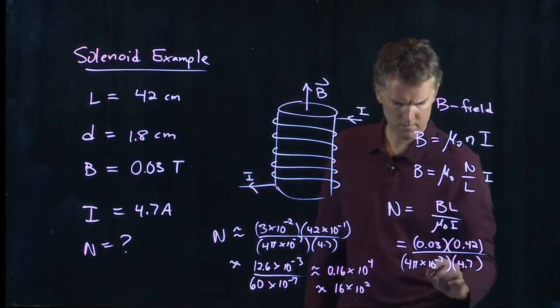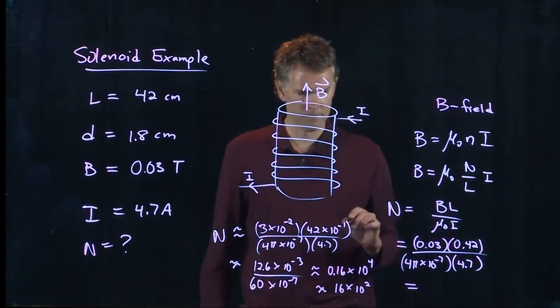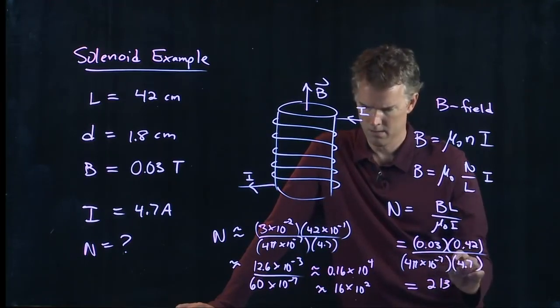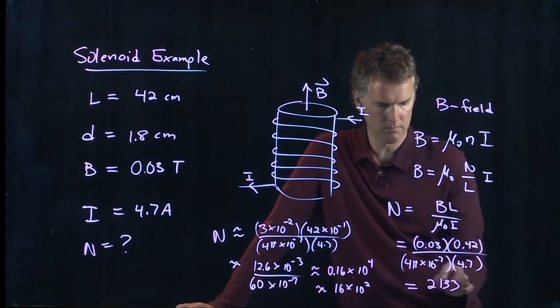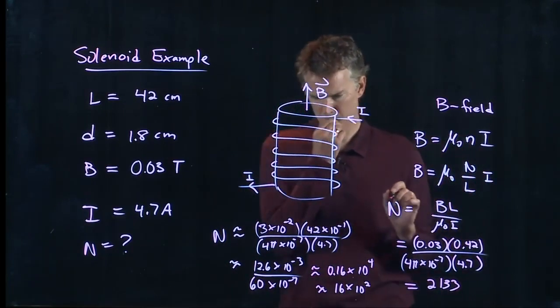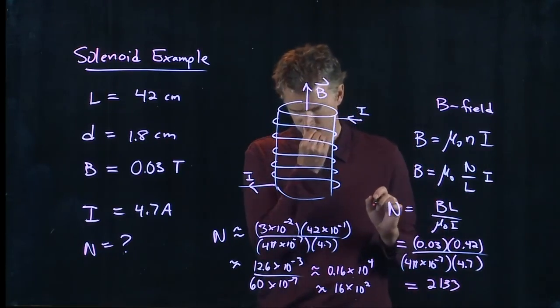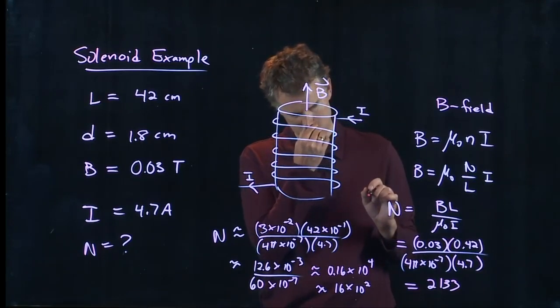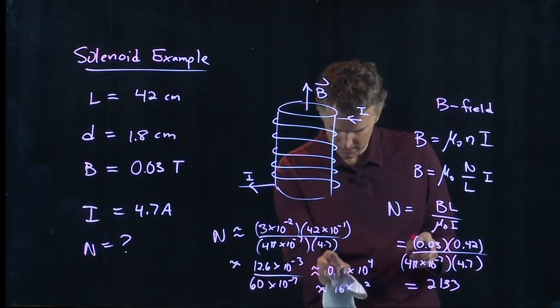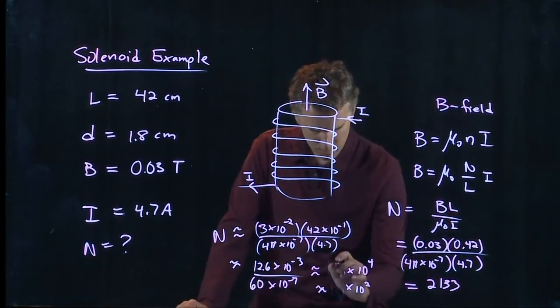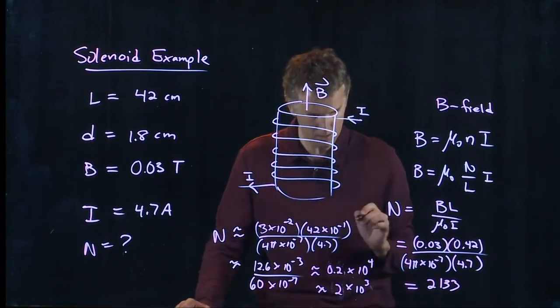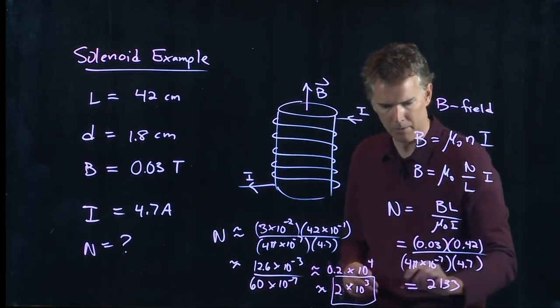Did anybody get a real answer for that? Anybody punch those in and get a number? 2100, okay so I did something wrong somewhere. Yeah you're right that's 0.2 but I'm still off by a couple orders of magnitude here. So if this is 0.2 times 10 to the 4, this is 2 times 10 to the 3. There we go, that's where we went wrong. So that was our approximation and this is the right answer.